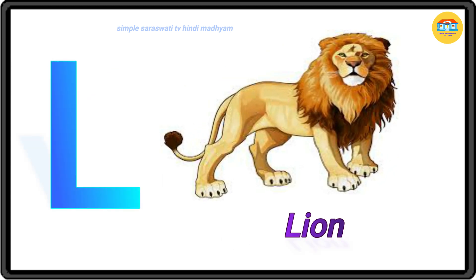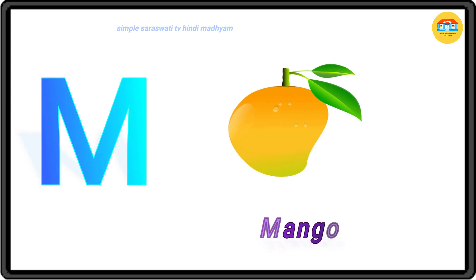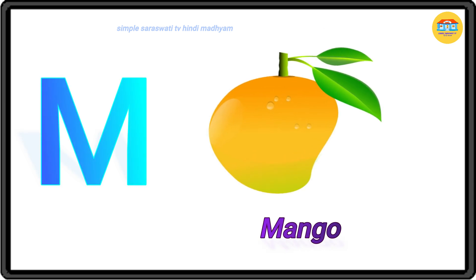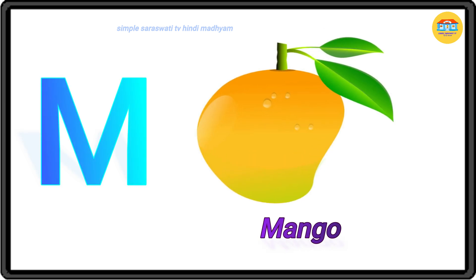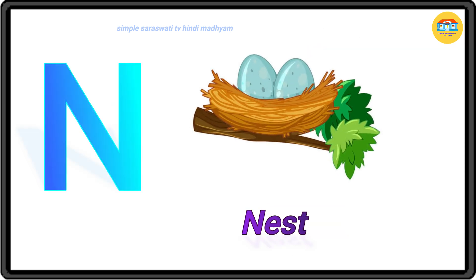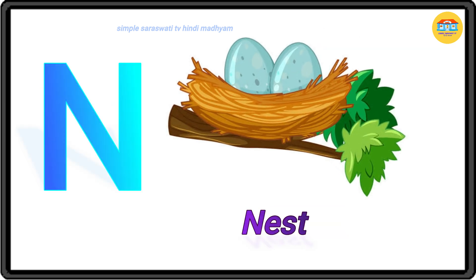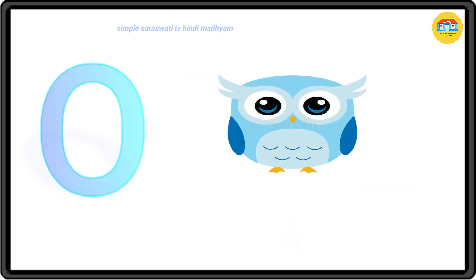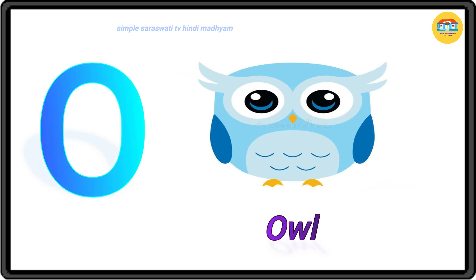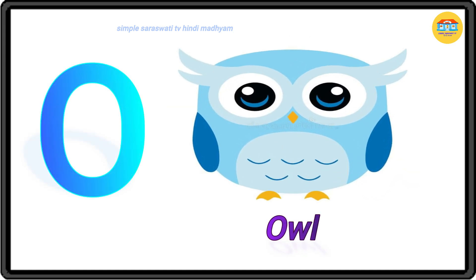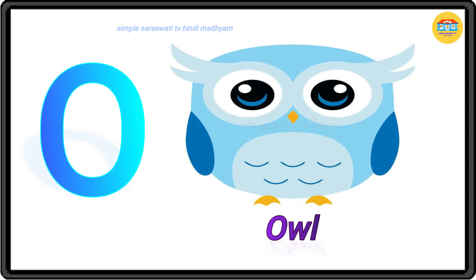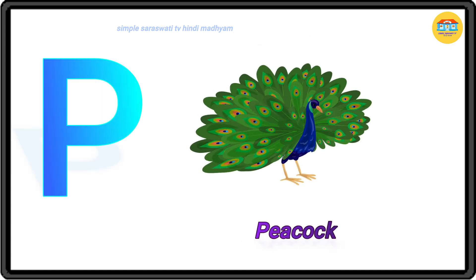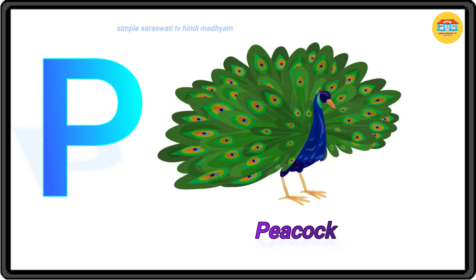K for kangaroo, L for lion, M for mango, N for nest, O for owl, P for eagle, P for peacock.